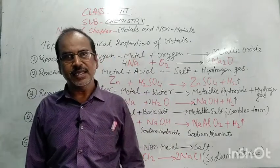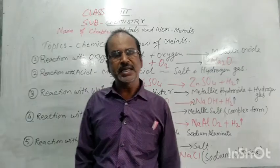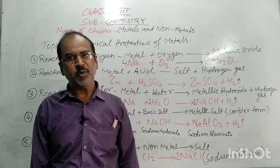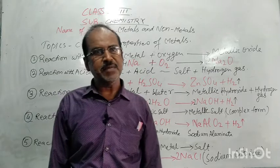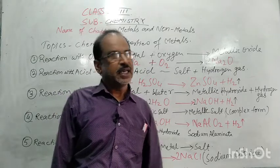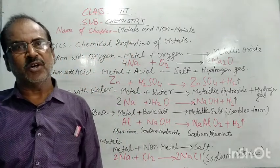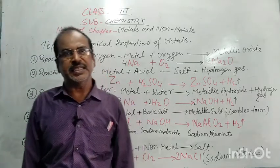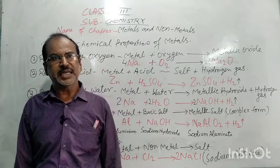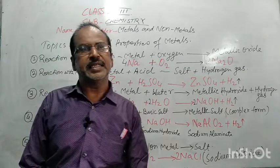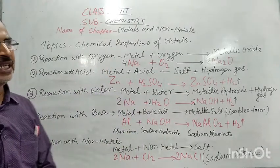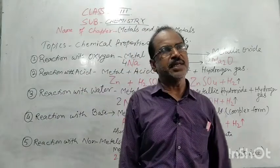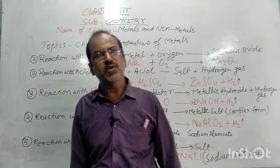In the previous day, you studied about metals and non-metals with their physical properties. Now we discuss the chemical properties of metals. The first chemical property of metal is the reaction with oxygen. Some metals react with oxygen in a simple condition and do not need to be heated.